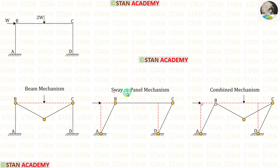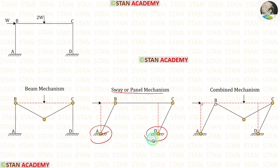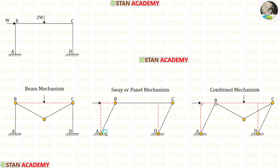Now let us do the sway mechanism. First we check the end supports. If the end supports are fixed, there will be plastic hinges. At point A we have a fixed support, so there will be a plastic hinge, and at point D also we have a fixed support, so there will be a plastic hinge. Then at joints B and C there will also be plastic hinges, giving a total of 4 plastic hinges.